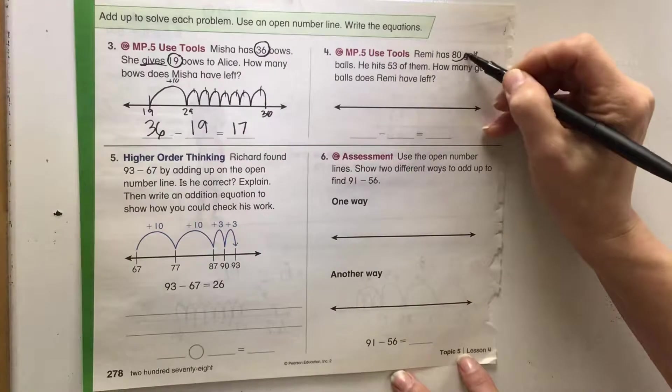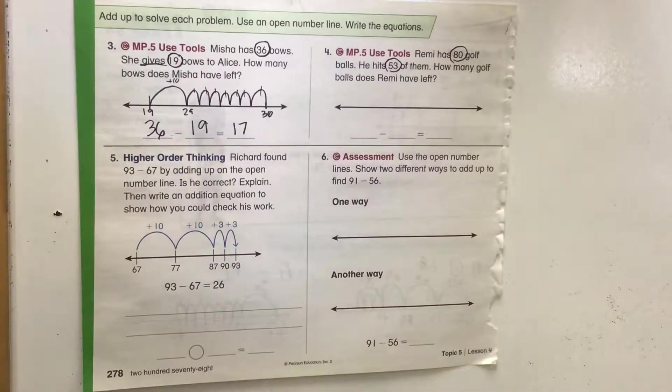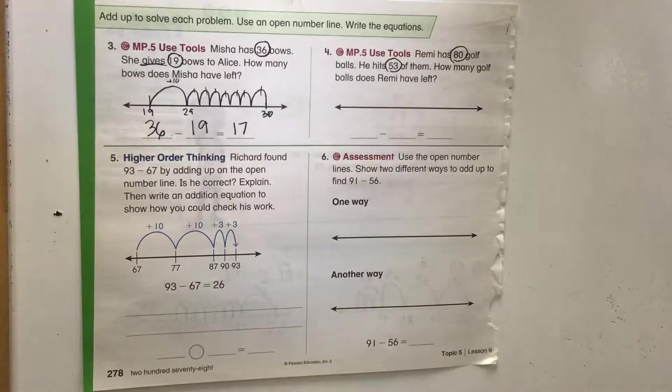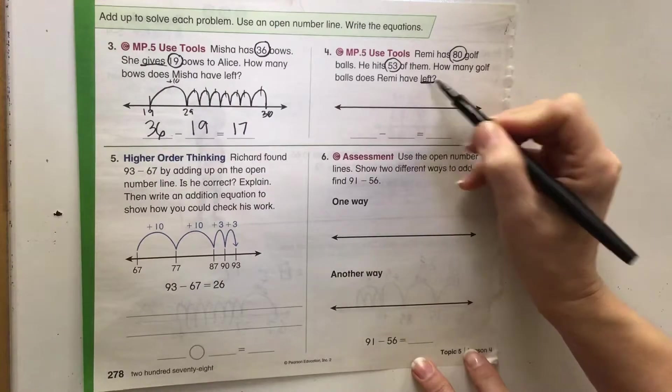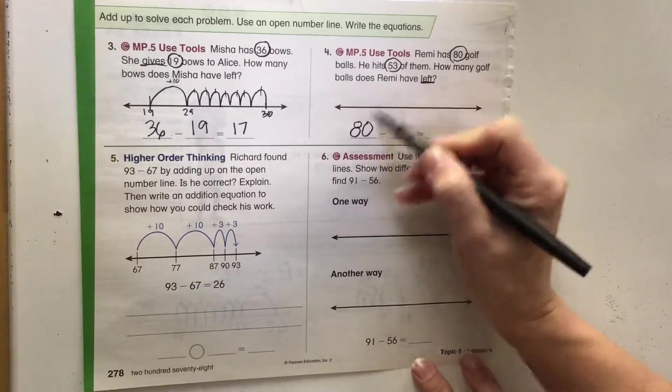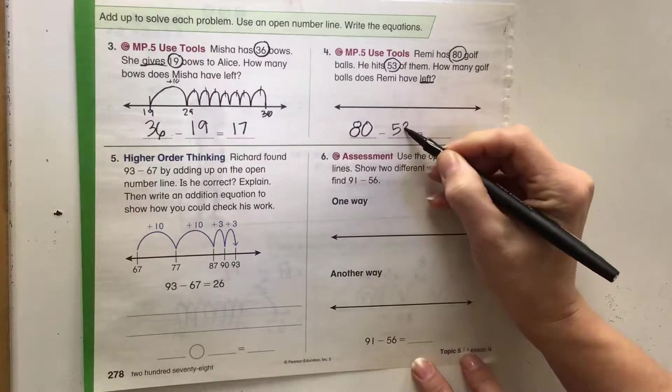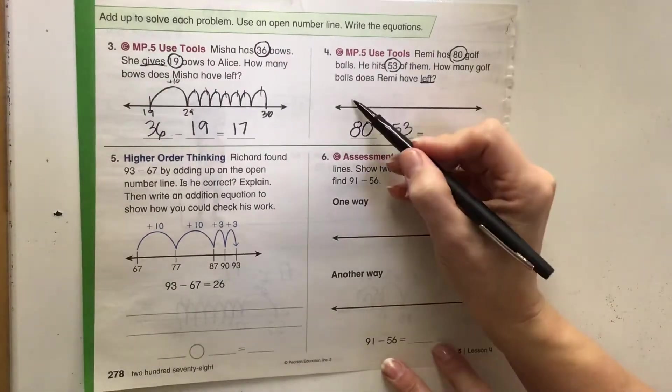Number four: Remy has 80 golf balls. He hits 53 of them. How many golf balls does Remy have left? So let's go and do our equation: 80 first, and he hits some of them and we know how many we have left is asking us to subtract. 80 minus 53. So let's try counting up on this one again.